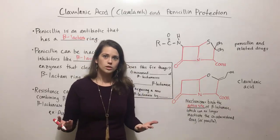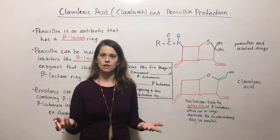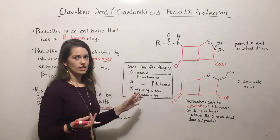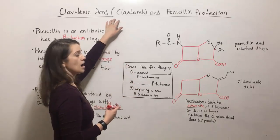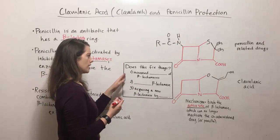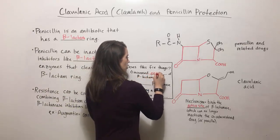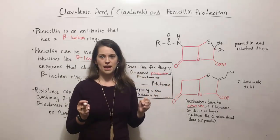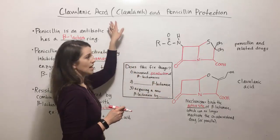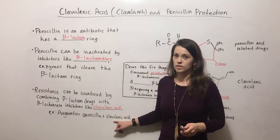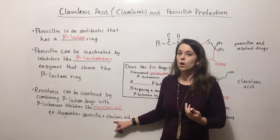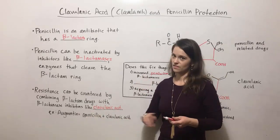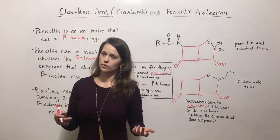So does that solve all of our problems with antibiotic resistance — can we just administer penicillin and related drugs easily now? Not exactly. In some cases, bacteria are able to overcome this clavulanic acid defense. For example, some bacteria exhibit increased production of beta-lactamases, meaning they make so many beta-lactamases that all of the clavulanic acid in a drug gets used up blocking active sites, and there are still even more beta-lactamases left over to inactivate the co-administered drug. So that's one way in which we've got resistance to clavulanic acid.